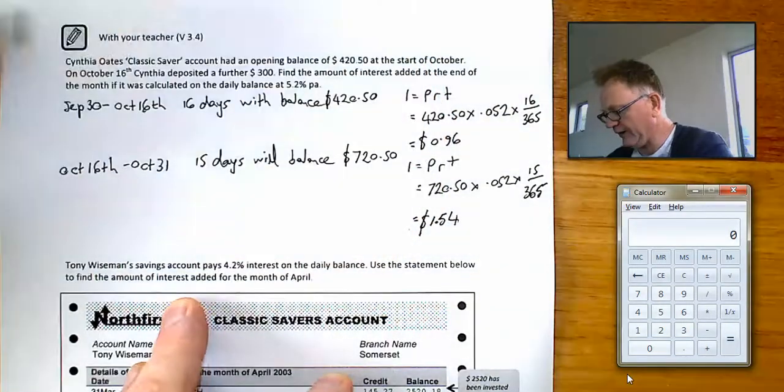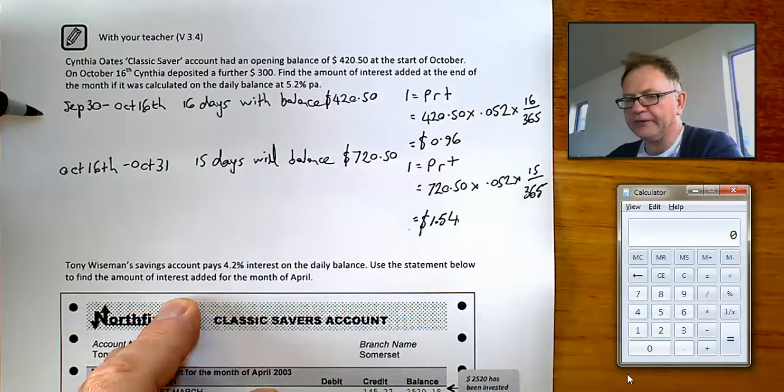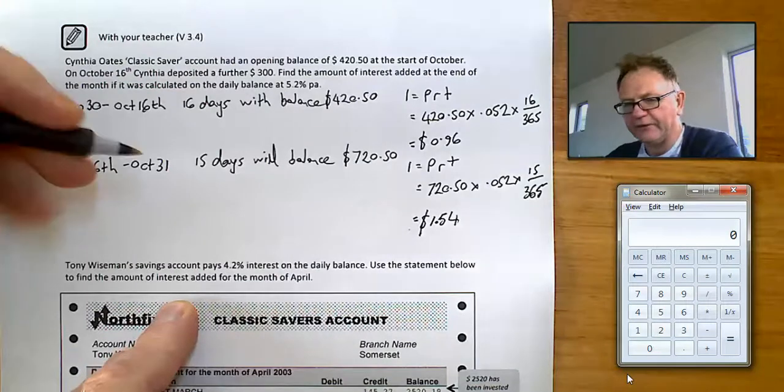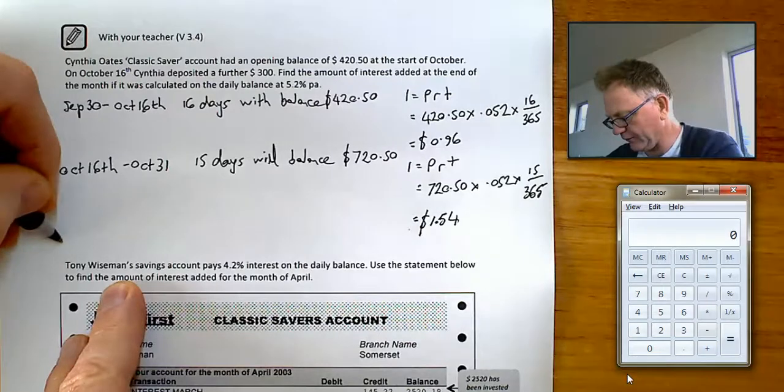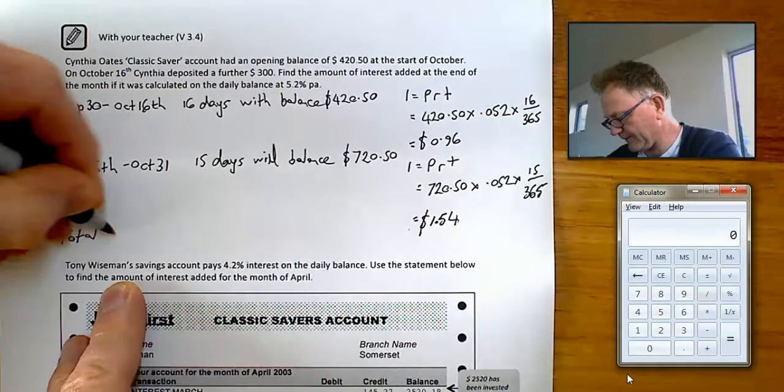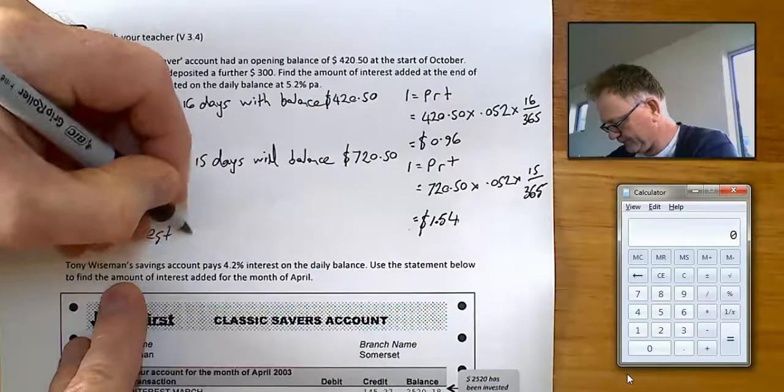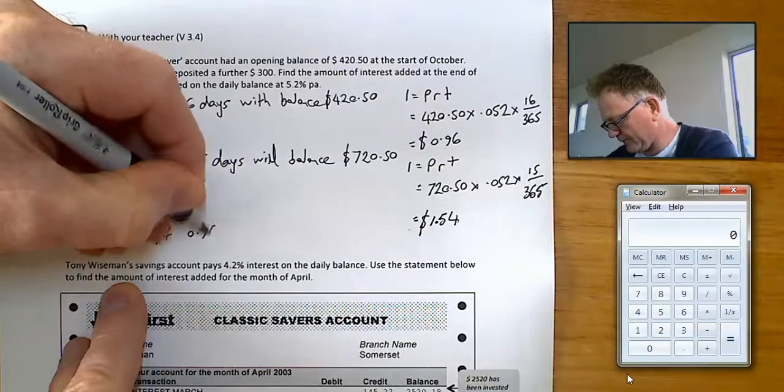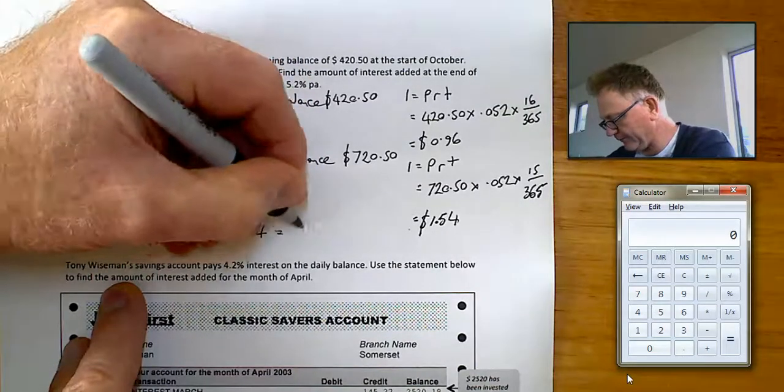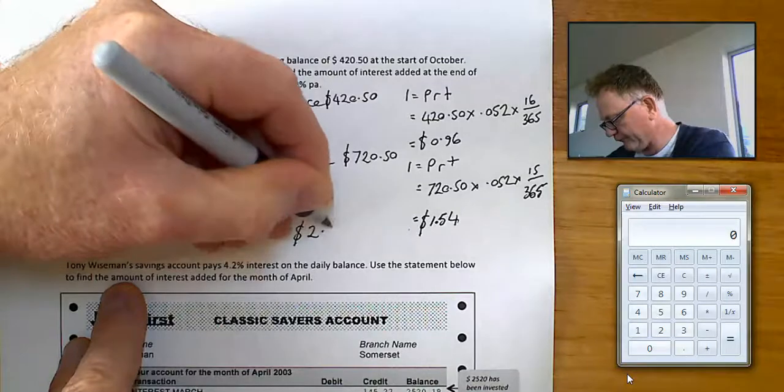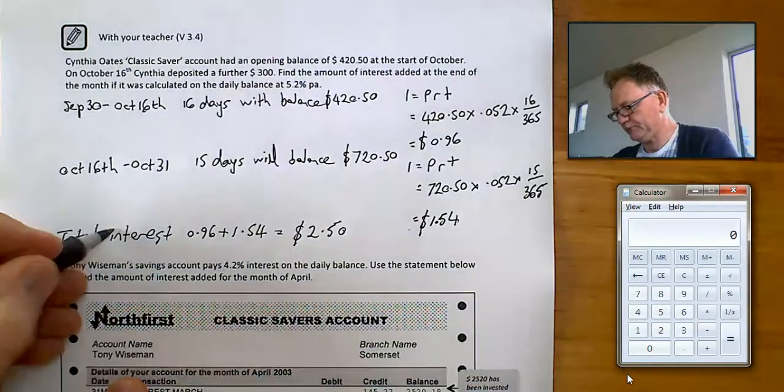A question asked you how much interest would be added at the end of the month. At the end of the month, all the interests for the various different periods get added together. And we'll come up with a total interest of $2.50. Add them all together.